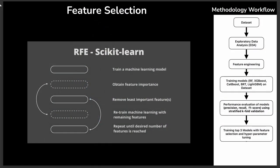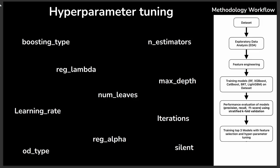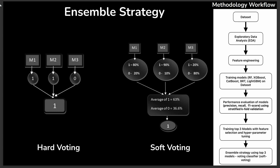Feature selection was a very important part of our modeling process. We used recursive feature elimination, an iterative process where you set the number of features needed and the model finds the best combination. We also tuned hyperparameters including boosting type, number of leaves, iterations, and learning rate. For the ensemble strategy, we opted for soft voting, which uses predicted probabilities rather than hard voting, and this proved more effective for our score.